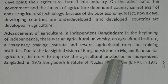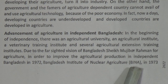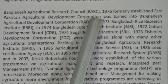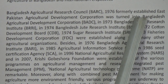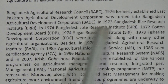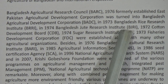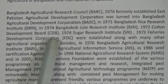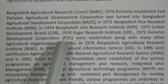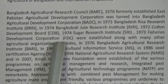In order to improve agricultural production, the following organizations were established: in 1972, Bangladesh Institute of Nuclear Agriculture (BINA); in 1973, Bangladesh Agricultural Research Council (BARC); in 1976, Bangladesh Agricultural Development Corporation (BADC); in 1973, Bangladesh Rice Research Institute (BRRI); in 1974, Bangladesh Jute Research Institute (BJRI); in 1972, Cotton Development Board (CDB); in 1974, Sugar Research Institute (SRI); and in 1973, Fisheries Development Corporation, along with many other agricultural organizations.